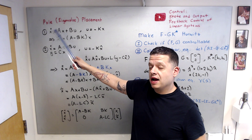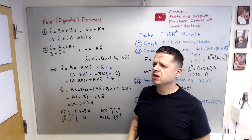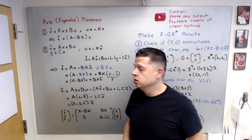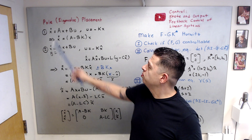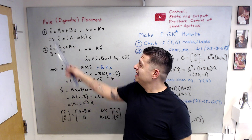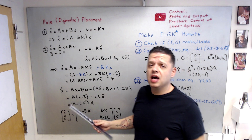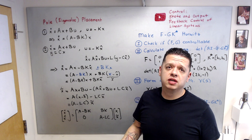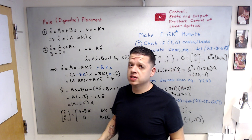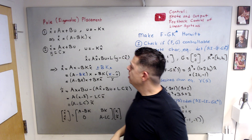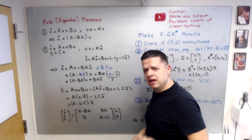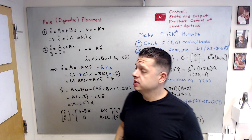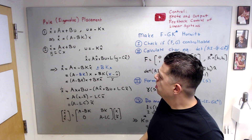Pole eigenvalue placement for linear systems — undergraduate material and classical control deal with Laplace domain formulations and poles, so it is often called pole placement. In state space form it is actually eigenvalue placement. For minimal systems that are controllable and observable, the eigenvalues of the state space equal the poles of the transfer function. In control, we try to make closed-loop matrices Hurwitz for asymptotic or exponential stability. Let's look at two examples.